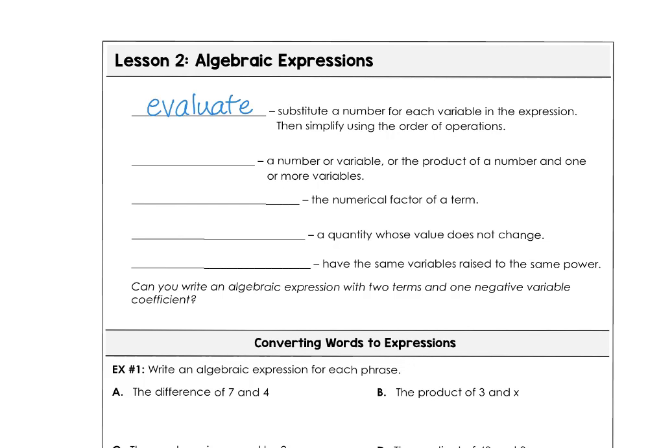When a number or a variable or the product of a number and one or more variables occurs, we call those a term. So multiplication, product, multiplication holds terms together. Addition and subtraction separate terms from each other.